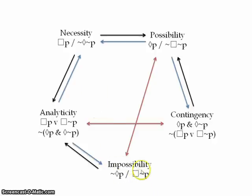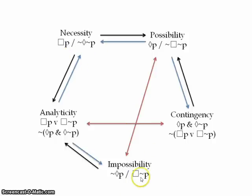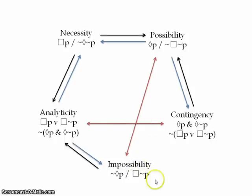You've got here necessarily not P and necessarily P. But of course, for something to be a logical contradiction, the negation has to be at the start of the formula. These two are not contradictions. For that to be the case, this would have to be not necessarily P.